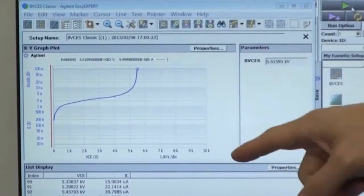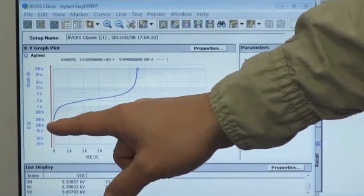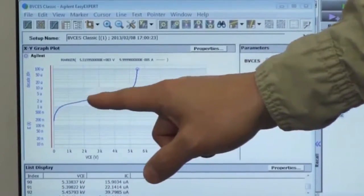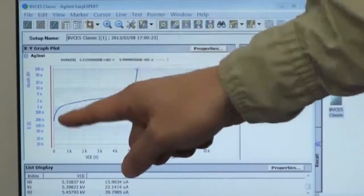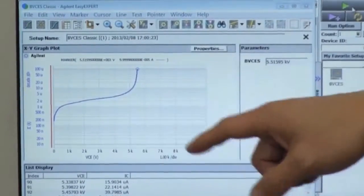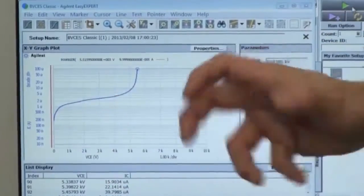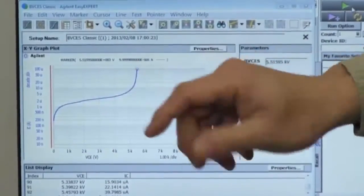Here is an example. In this case, drain current, leakage current is plotted in logarithmic scale. And by using logarithmic scale, you can see the tiny change of leakage current precisely.